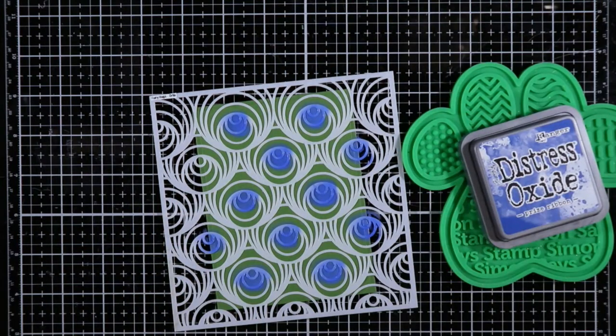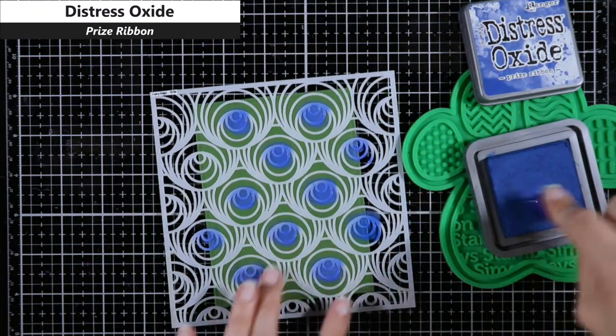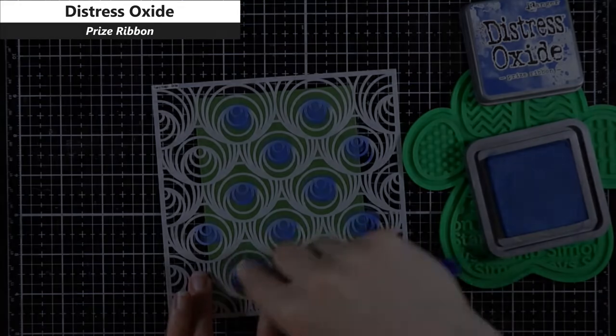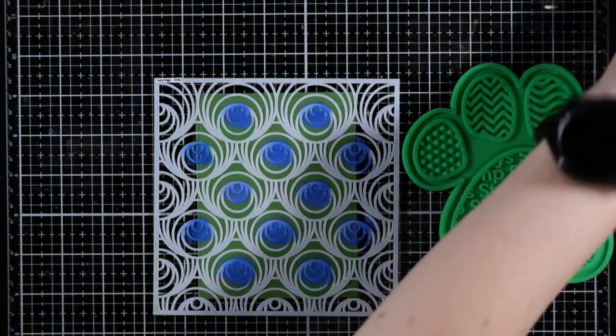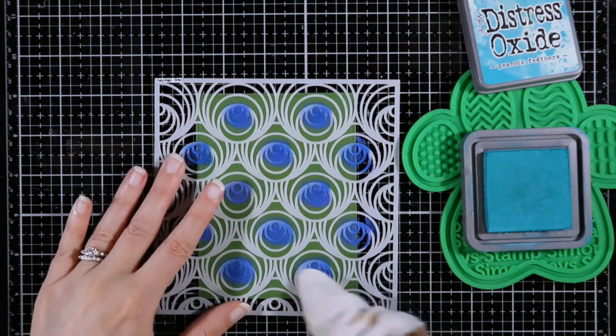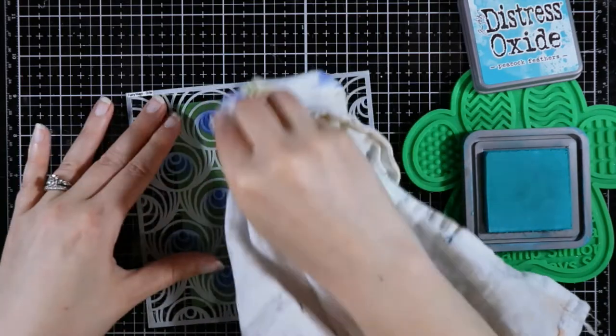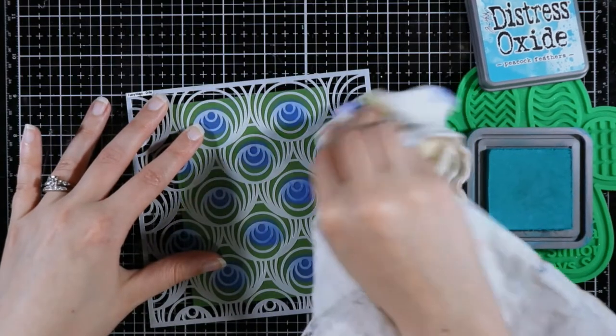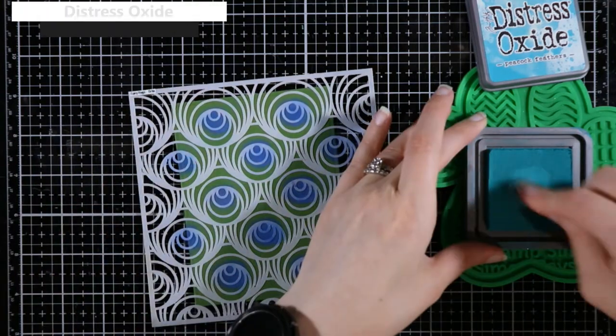Now I looked at this after I did all the little areas and I decided that I wanted that blue to be a little bit brighter, so I'm going to go over each and every area with Prize Ribbon instead of the Blueprint Sketch. I did cut some of that out so you don't have to watch me do that all over again because I know the ink blending can be a little tedious to watch.